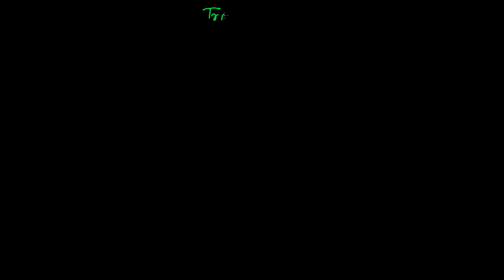Today we will be learning the first basic shape in geometry, that is called a Triangle. From the name itself you can catch what it means. Tri means three and angle means corner. So a geometrical shape which has three corners is called a Triangle.